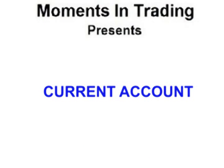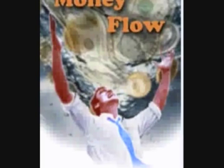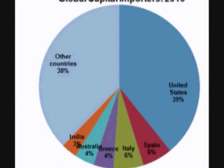The Capital Account. The capital and financial accounts track the movement of funds for investments and loans into and out of a country. Although they are sometimes talked about separately, the financial account is actually a subsection of the capital account. The capital and financial accounts consist of direct investments, portfolio investments, government capital, and official reserve transactions.